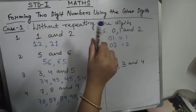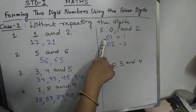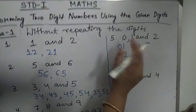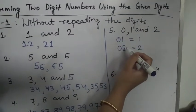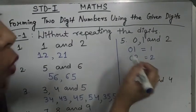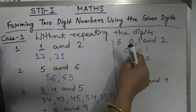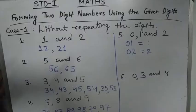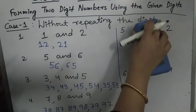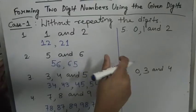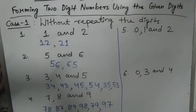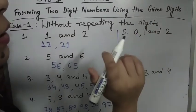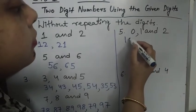If we write 0 in the tens place and only one digit follows in the ones place — whether 1 or 2 — then 0 has no value, so we write only the number in the ones place. Now making numbers with 0, 1, and 2: first cover 2, and with 0 and 1 we can make 1, 0 — that is 10.